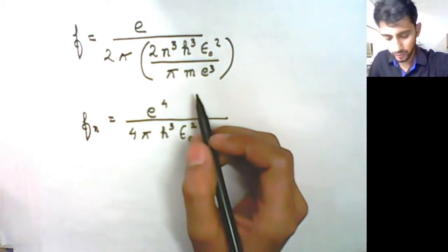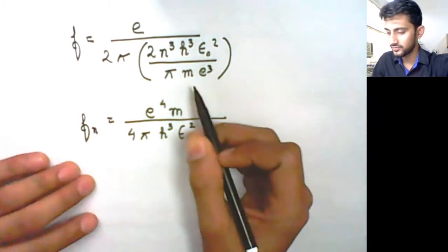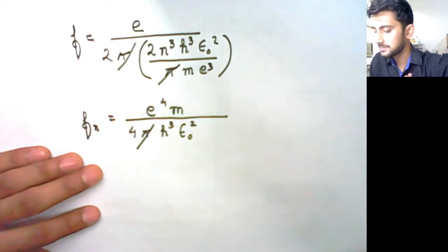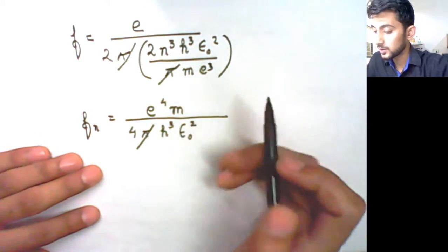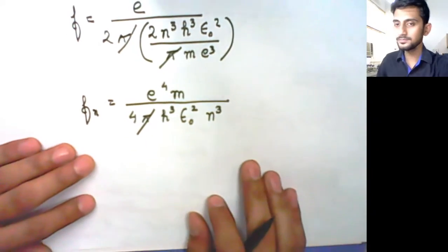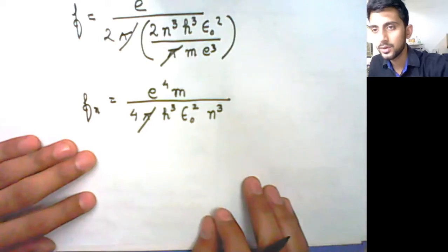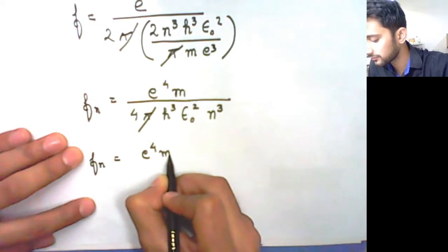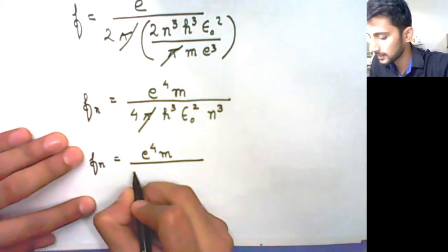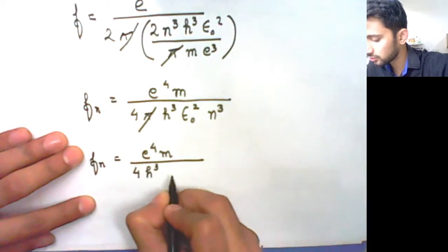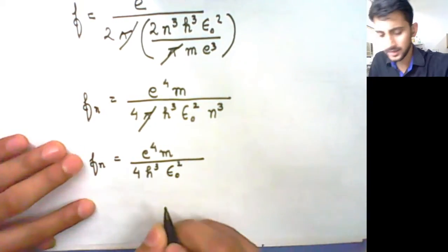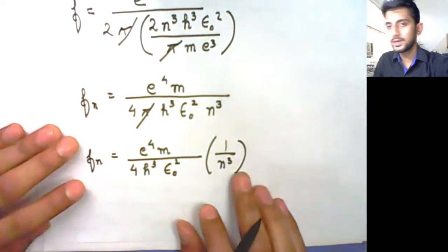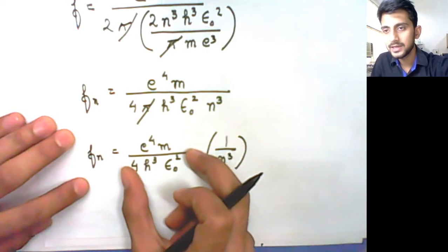We also have m going up to the numerator, and the π cancels, so we no longer have any π. We also have n³ in the denominator. So the final equation for the frequency of revolution of an electron in the nth orbit is: fₙ equals me⁴ upon 4h³ε₀² into 1/n³.